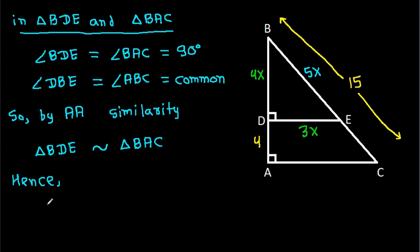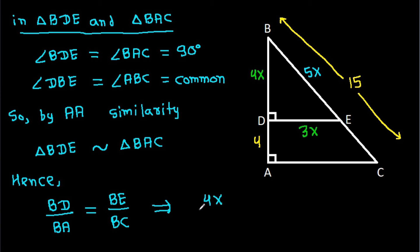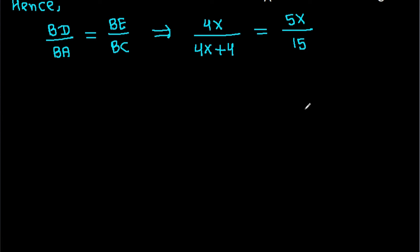Hence, BD over BA will be equal to BE over BC. BD is 4x, and BA is 4x plus 4. BE is 5x and BC is 15. And if we cross multiply, then 4x times 15 will be equal to 5x times (4x plus 4).